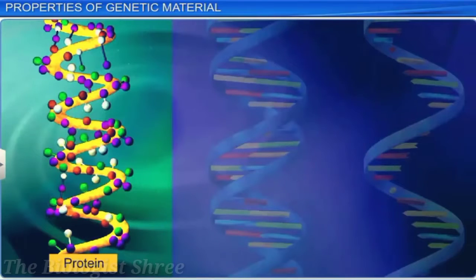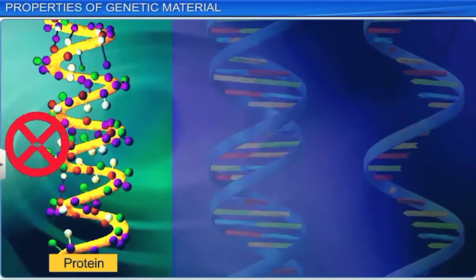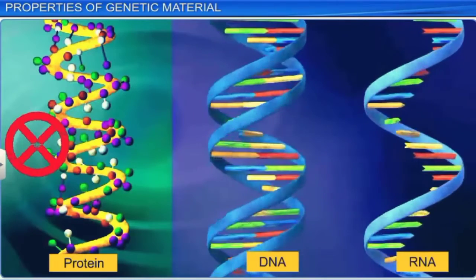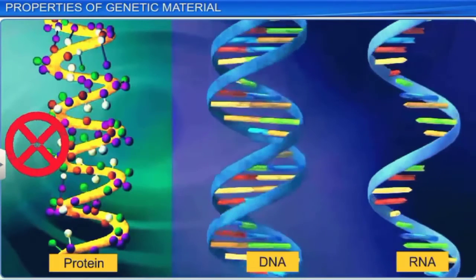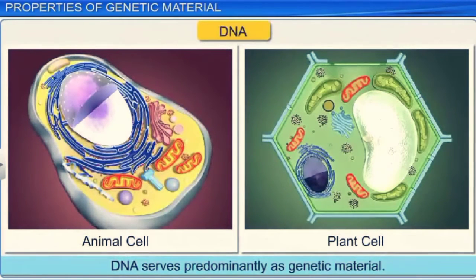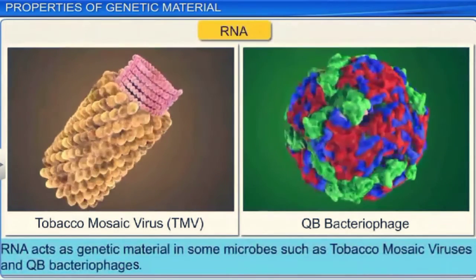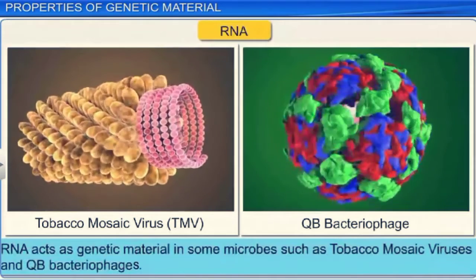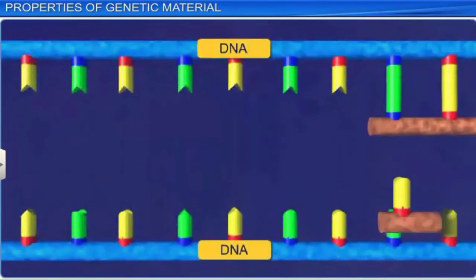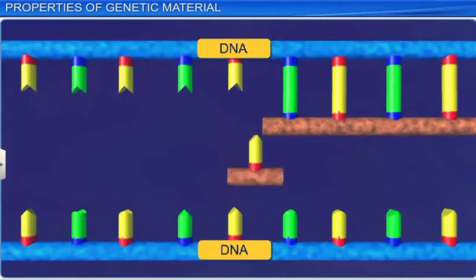Most biomolecules, including proteins, fail to fulfill these criteria. Even so, both the nucleic acids, DNA and RNA, meet all these requirements. Although DNA serves predominantly as genetic material, RNA also acts as genetic material in few microbes such as tobacco mosaic viruses and QB bacteriophages, and also performs the role of a messenger and adapter.